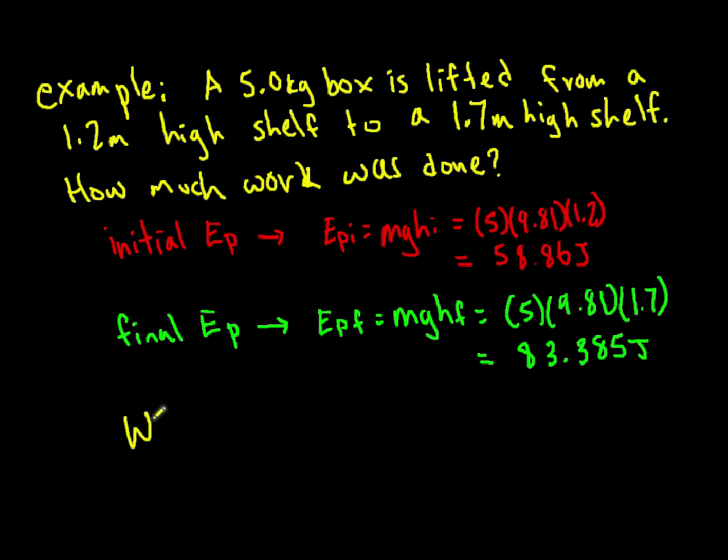Since work is equal to change in energy, this change in potential energy results in work. This is Ep final minus Ep initial, which is 83.385 minus 58.86. This gives us work equals 25 joules.